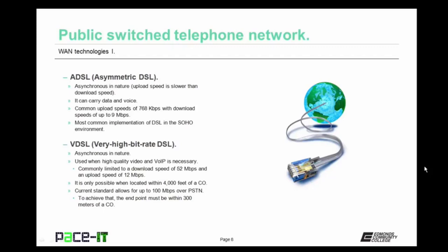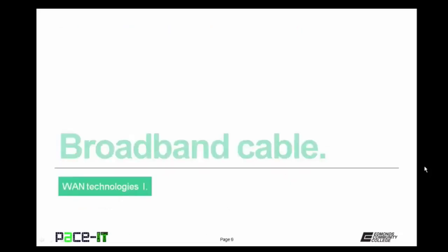VDSL is commonly limited to download speeds of 52 megabits per second with an upload speed of 12 megabits per second — a whole lot faster than ADSL. But VDSL is only possible when you're located within 4,000 feet of a central office. The current standards do allow for up to 100 megabits per second speed over the PSTN using VDSL, but to achieve that, you must be within 300 meters of the central office. Now that the PSTN is out of the way, let's move on to broadband cable.